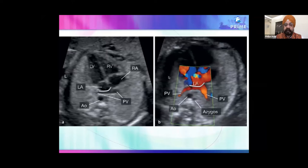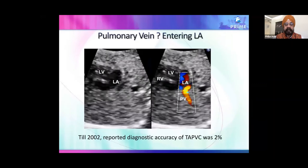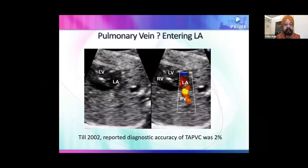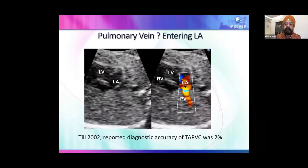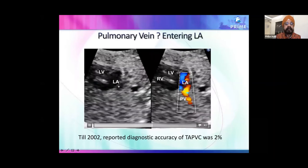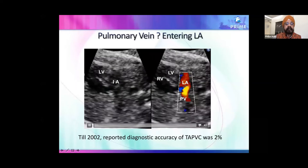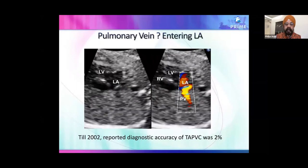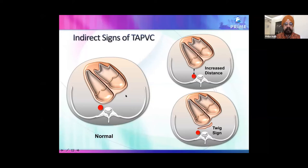Until 2002, the pickup rate for TAPVD was only about 2%, with the majority missed until after birth. That small structure — the superior wall of the left atrium acting as a partition — is the embryological defect producing TAPVD. This is why indirect signs are needed; you cannot rely on a single direct structure to differentiate normal from abnormal.